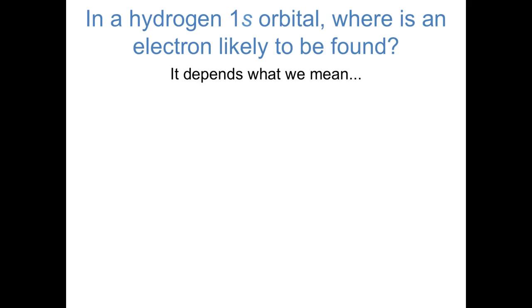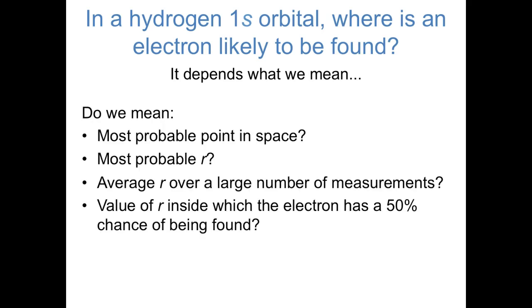This question isn't quite as straightforward as it sounds — it depends what we mean by where an electron is likely to be found. There are several related questions: Where's the most probable point in space? Where's the most probable distance from the nucleus? What would be the average distance over a large number of measurements? Or what's the distance inside of which there's a 50% chance of finding the electron? In terms of mathematical concepts, you can think of those last three as the mode, mean, and median distance from the nucleus.